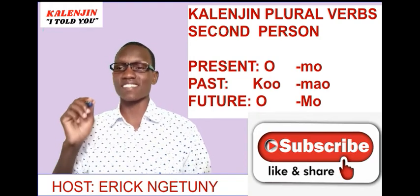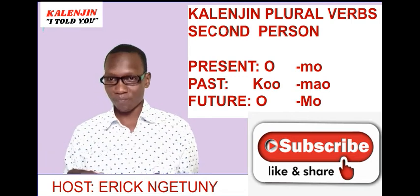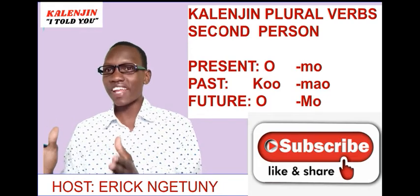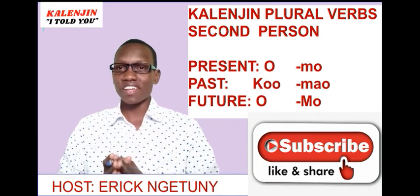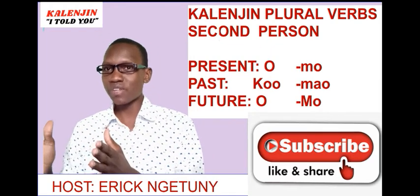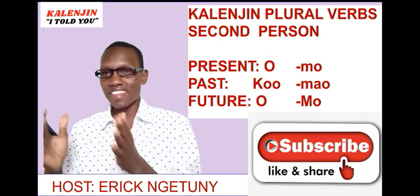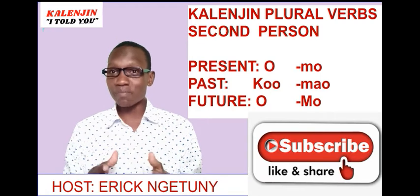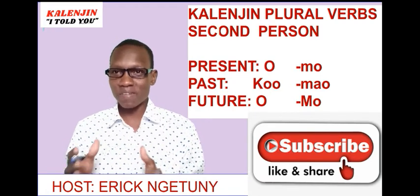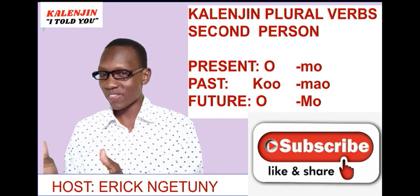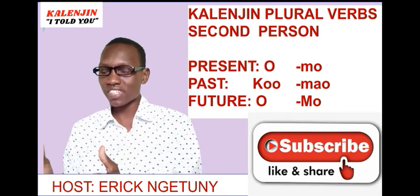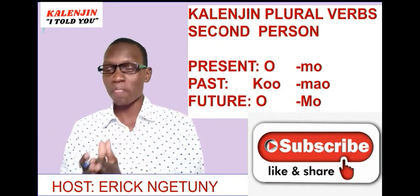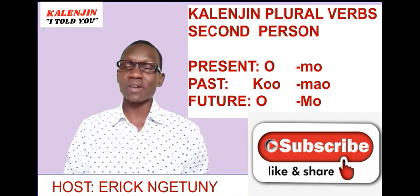Then for the second person past tense, it takes ko o for the positive part of it, and then ma o for the negative part of it. For example, ko o Rissoti means you were crying. Then ma o Rissoti means you were not crying. So for the positive it takes ko o, and for the negative it will take ma o — ma o Rissoti, ma o chule, ma o kuwanye. So it takes ma o for the negative part of it under the past tense.